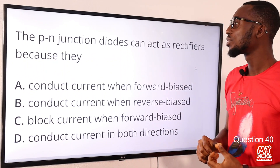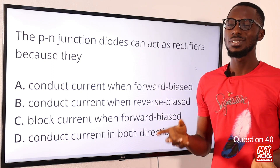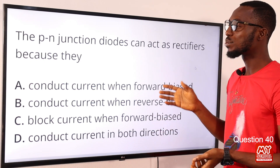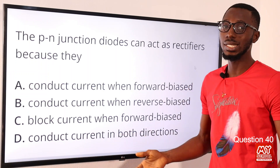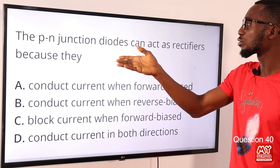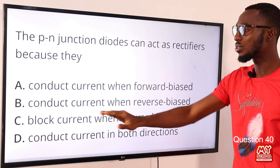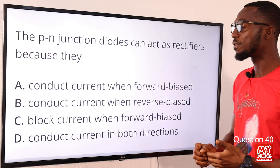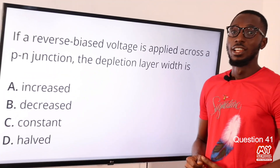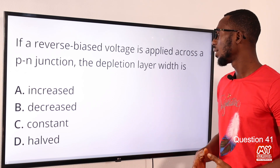Question 40: The P-N junction diode can act as a rectifier because their current-voltage characteristic does not obey Ohm's law. When the P-side is connected to the positive terminal and the N-side to the negative terminal, it shows low resistance to current flow. The P-N junction diode can act as a rectifier because it conducts current when forward biased and prevents current when reverse biased. The correct option is option A.